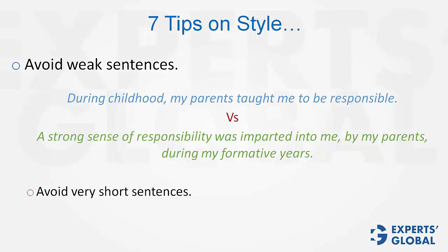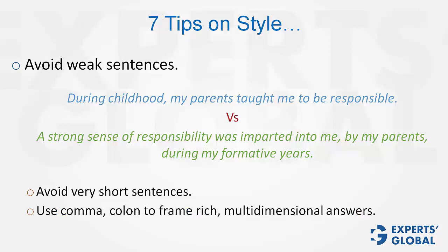Have larger sentences and, wherever possible, use commas or colons to frame rich, multi-dimensional answers. For example, if you are writing about why you want to attend a particular B-school, one style is to write short sentences — one reason per sentence. But the same content can be made far more impactful if you instead write: 'I want to attend this institution because of A, B, C, D, and E.' This way, you make far greater impact using fewer words.